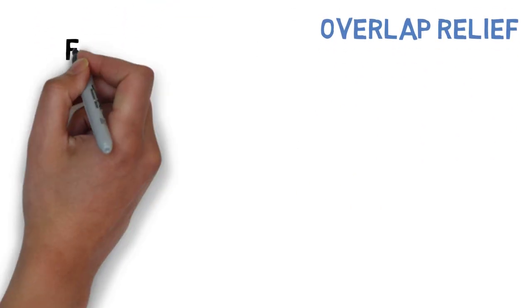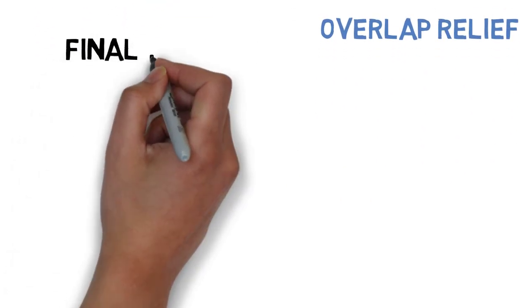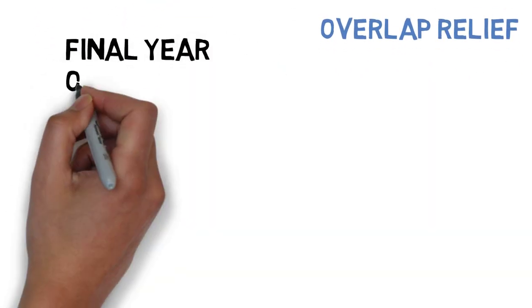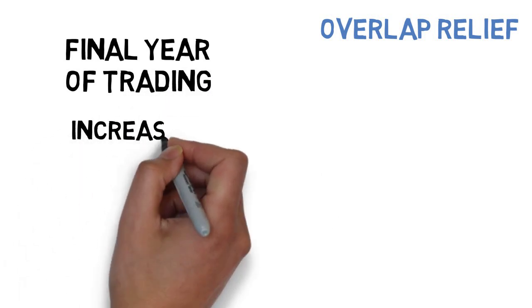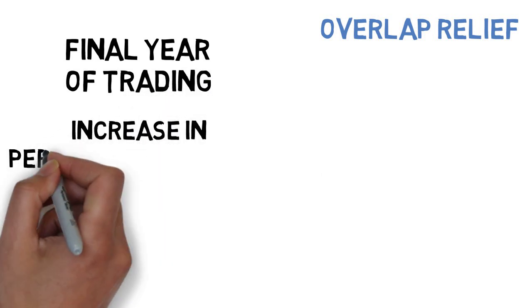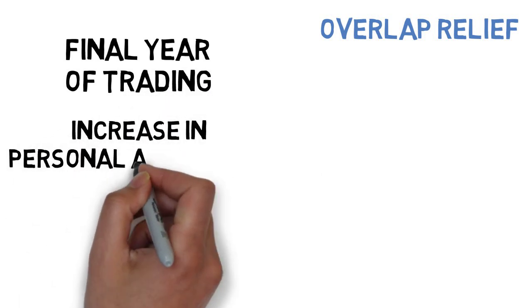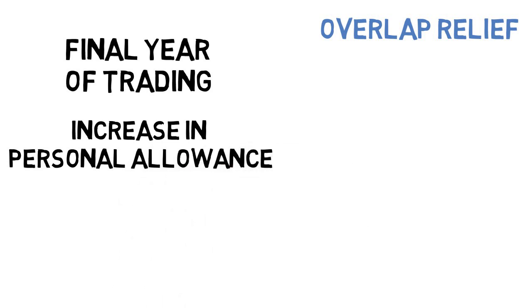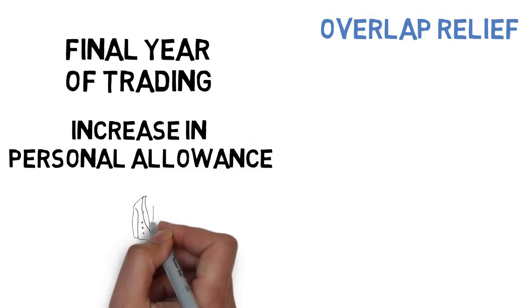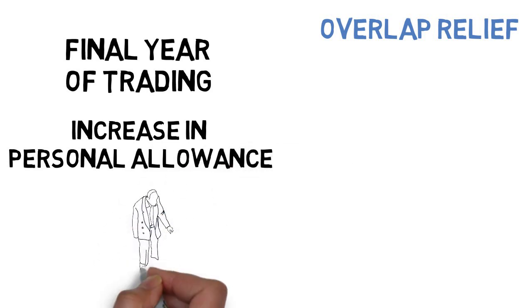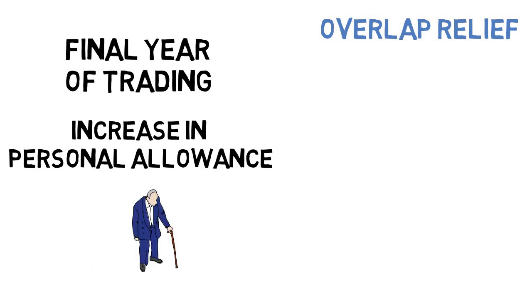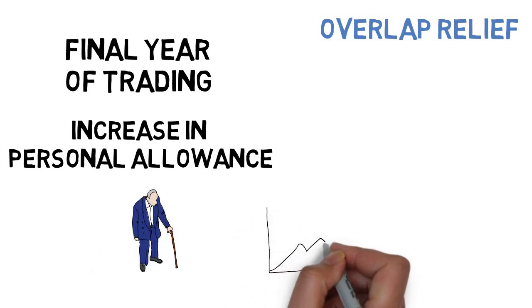Overlap relief is where, in your final year of trading, you can claim back the overlap profit from the beginning of your business. Essentially you'll increase your tax-free allowance by whatever the overlap profits you paid at the beginning were, but this might not be for many years and it isn't adjusted for inflation.